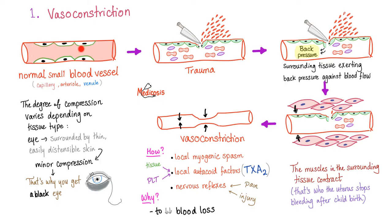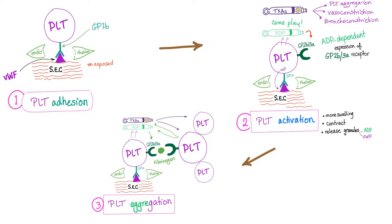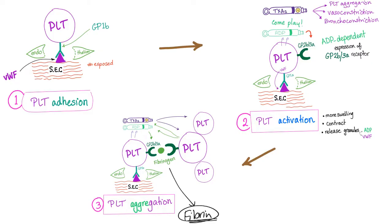The first thing that happens after you injure yourself is vasoconstriction — a local myogenic spasm, automatic. After this, we have primary hemostasis, the platelet plug: first platelet adhesion, thanks to GP1B and von Willebrand; then platelet activation, thanks to thromboxane A2 and ADP, which is the release of the platelet granules. ADP will help express the receptor GP2B3A, used to fuse with other platelets, with a molecule of fibrinogen.